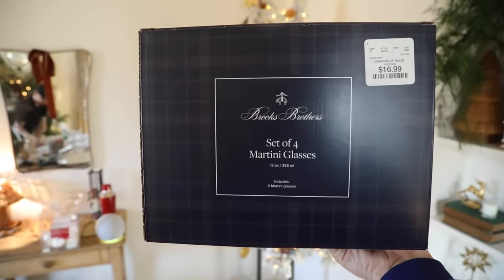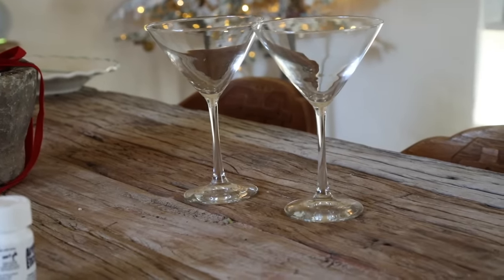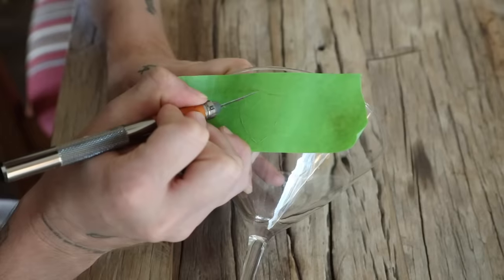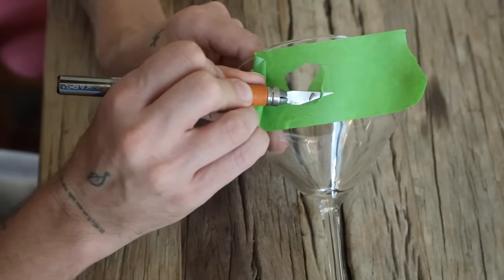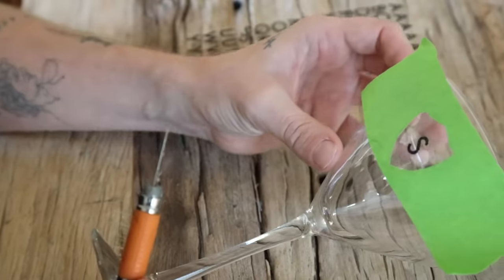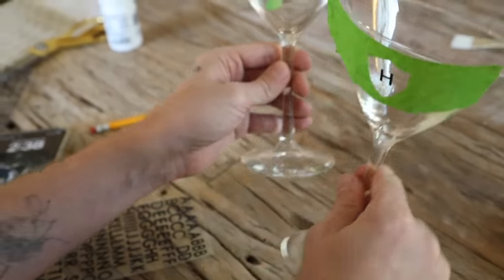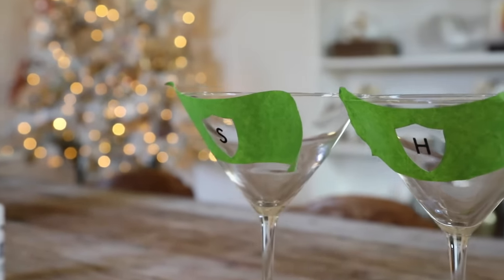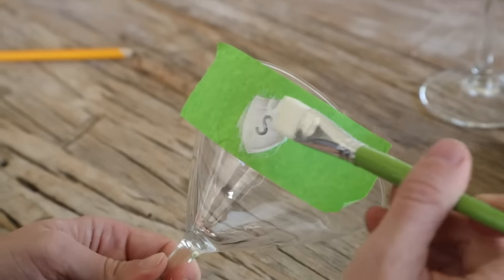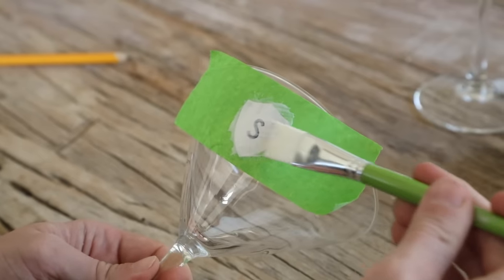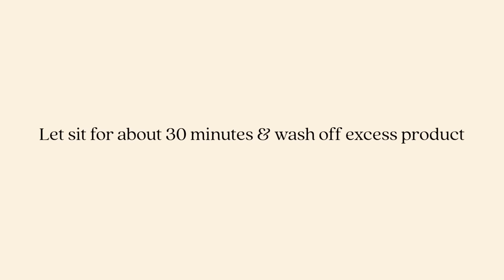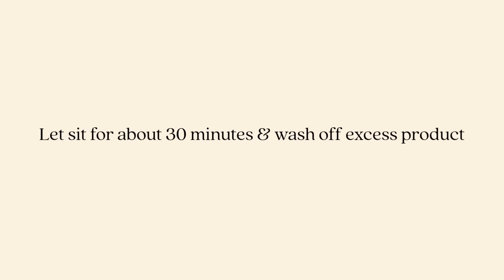For some reason on this one, it has a bit of a splotchy appearance. I'm not too sure why. The main project that I wanted to do were individual martini glasses. I got these at Home Goods the same time I got the platter in the first project. I created smaller crest shapes the same exact way by putting the tape over the top of my phone.